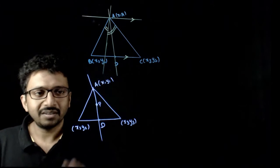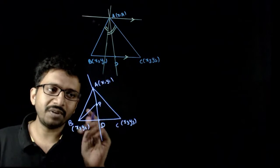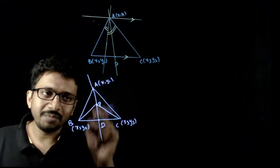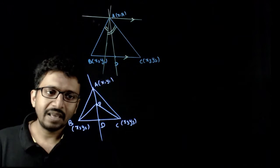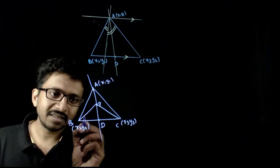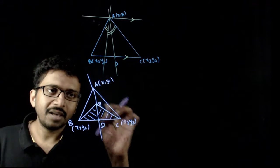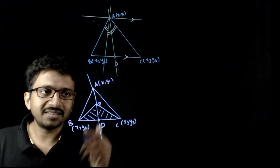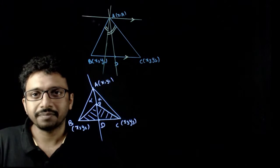If P is any point on this median, and if you join P with B and P with C, we know that the median divides the triangle into two equal halves. So triangle area ABD equals triangle area ADC. Also for triangle PBC, PD is the median, so those two areas are also equal. Hence the remaining area: triangle APB has the same area as triangle APC.